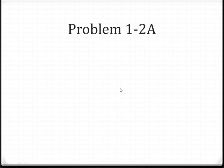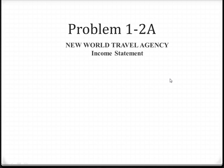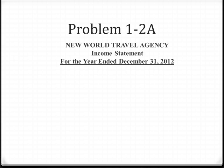To create an income statement, the first thing we need to start with is a title. We list the title of the company — New World Travel Agency — the title of the statement, which is an income statement, and then the period which this particular statement covers, in this case for the year ended December 31, 2012. Once we get the title in place, we then start with revenues. We list the revenues — in this case, fees earned for $200,000. Please understand that fees earned is the revenue account for this problem.